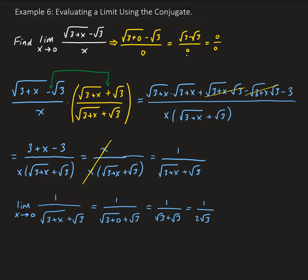If you want, you can simplify this — we can go ahead and rationalize this. Multiply the numerator by square root 3 and the denominator by square root 3, so we end up getting root 3 all over 2 times 3, so that's going to be 6. So that's our solution — root 3 over 6 is the solution to this limit.